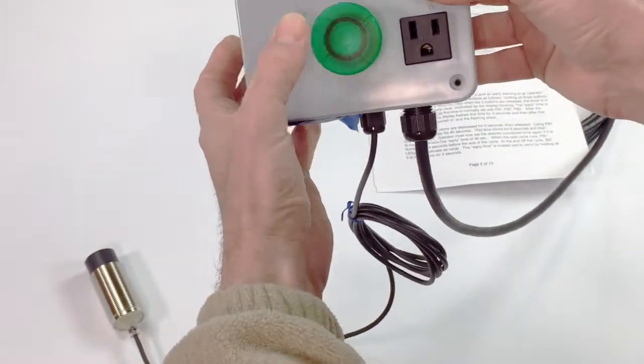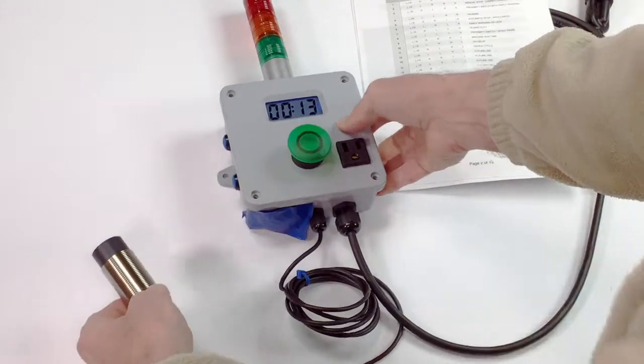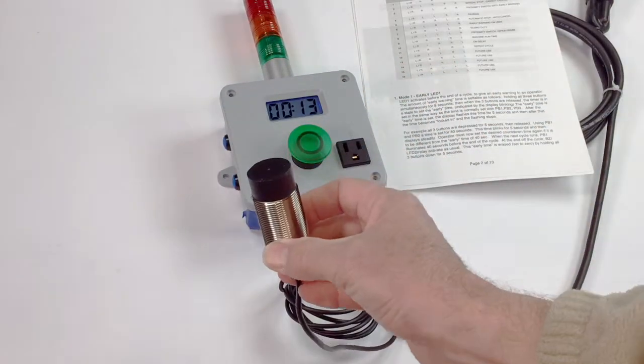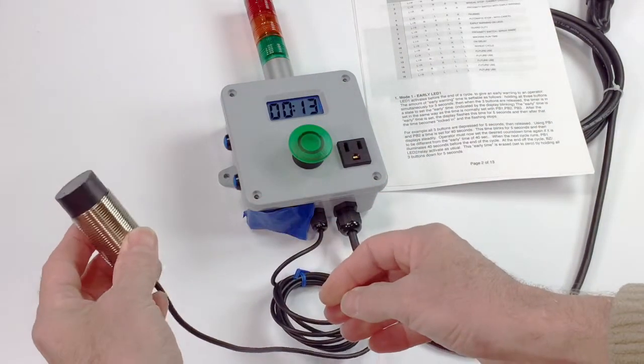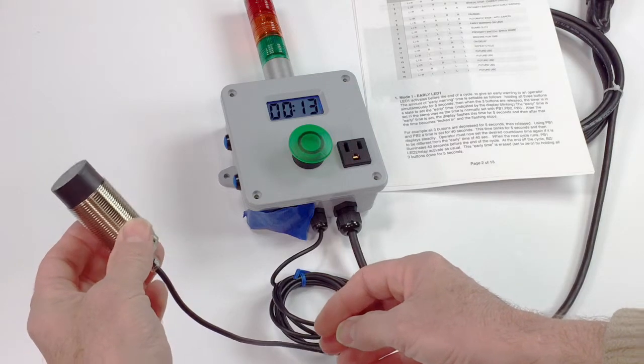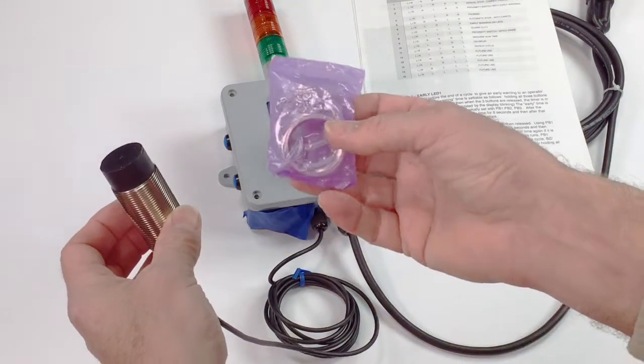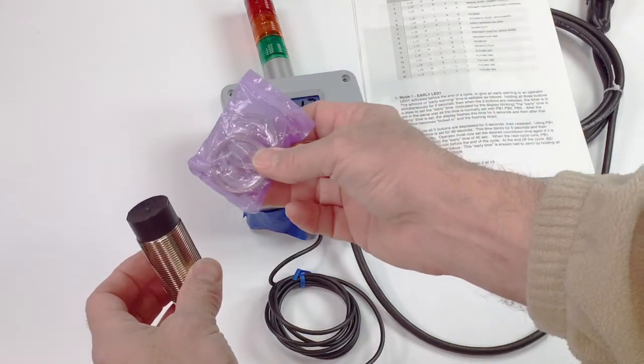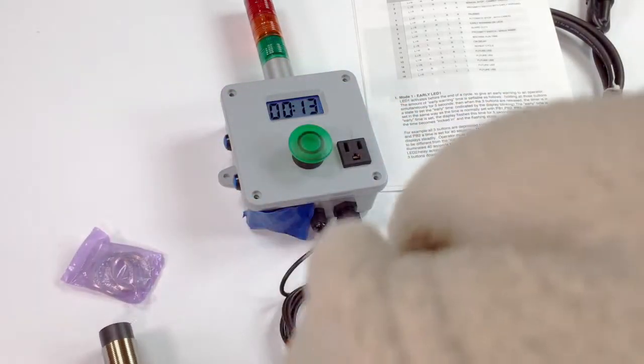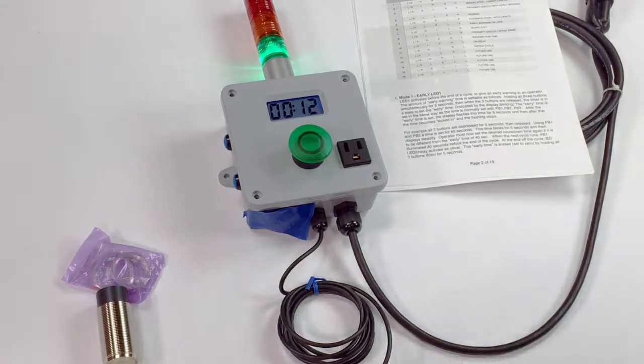We're going to trigger the cycle by putting some metal in front of the proximity switch. This one has a 30 millimeter range, and dirt does not affect it. So we're going to sense the mounting nuts through the bag here.